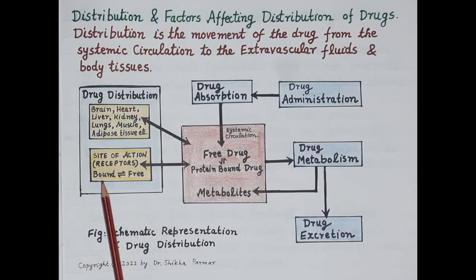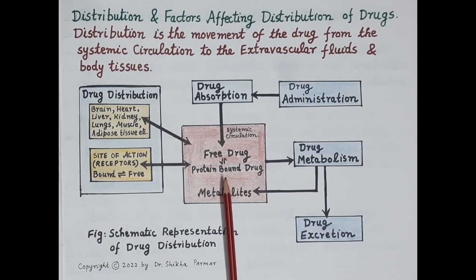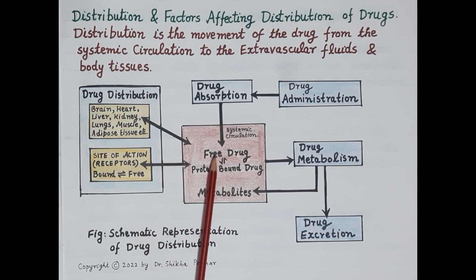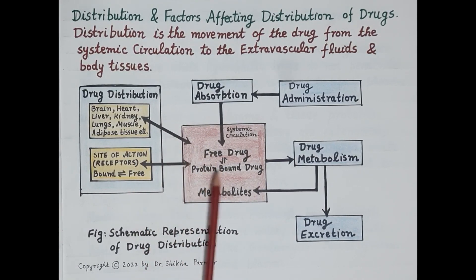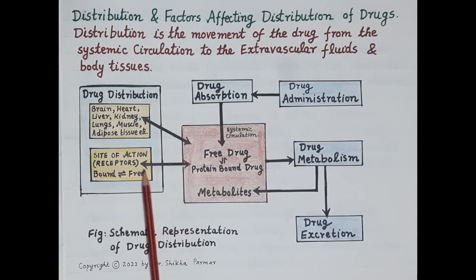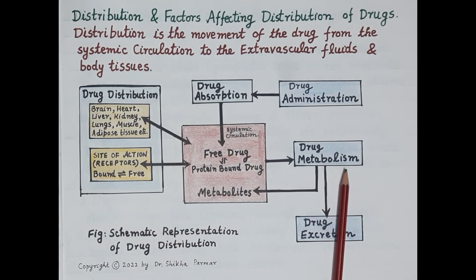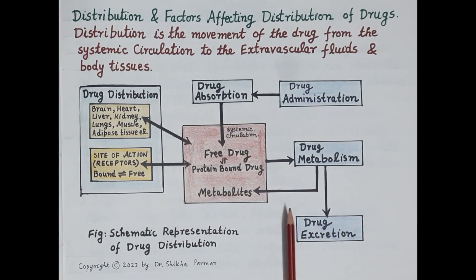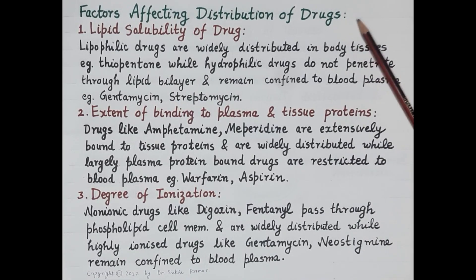Initially the plasma contains the entire drug, and as the drug moves from plasma to extravascular tissue, this continues until an equilibrium is established between free drug in the plasma and free drug in the tissue fluids, as depicted in this diagram. Metabolism and excretion of the drug also occur simultaneously along with distribution, making the entire process highly complex.